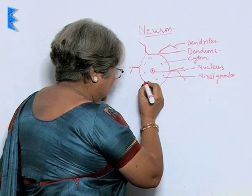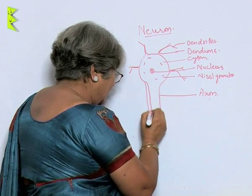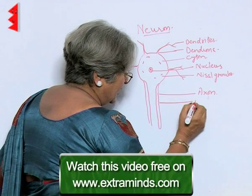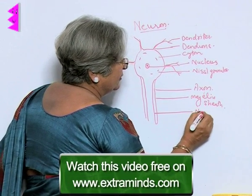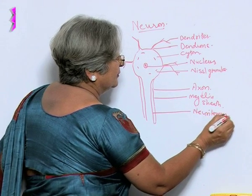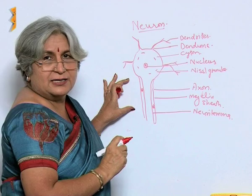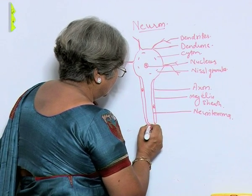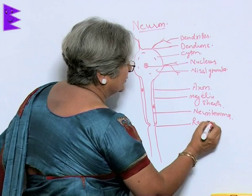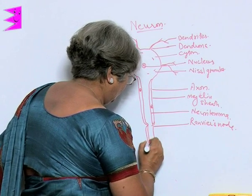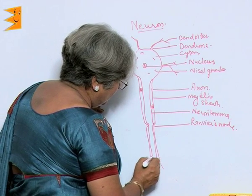From the cytone arises one main branch which is called the axon. This axon is double-layered: the outer layer is called the myelin sheath and the inner one is called the neurilemma; between these two there can be nuclei. After a little distance, the axon shows a constriction which is called Ranvier's node, and then after more distance it divides into nerve endings.